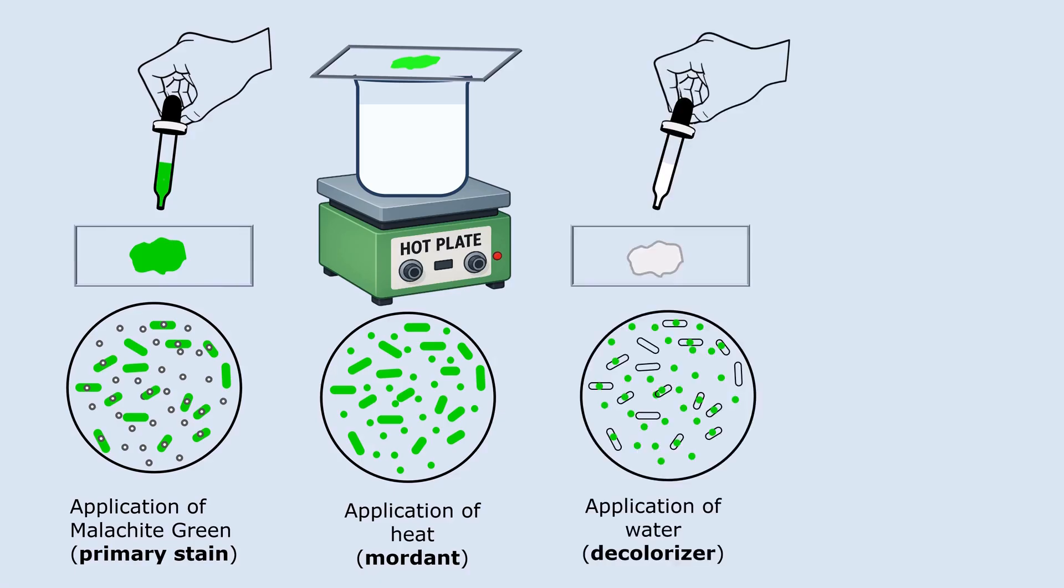During the washing step, vegetative cells lose malachite green and become colorless, and only endospores and pre-endospores retain this green dye. This is because vegetative cells have thin permeable cell walls. Malachite green is water-soluble and weakly binds to cell components.